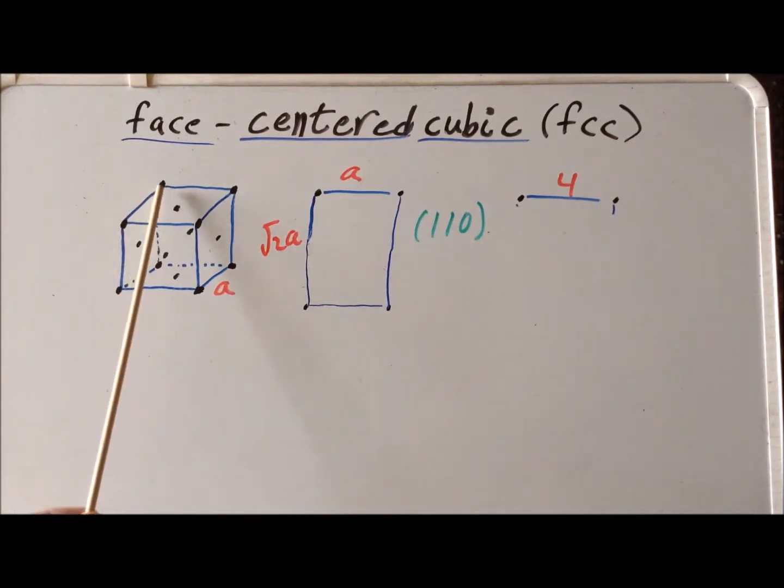they have in common is they have an atom at the vertex, at each vertex of the cube. The difference in the face-centered cubic, it also has an additional atom at the center of each of the six faces of the cube.